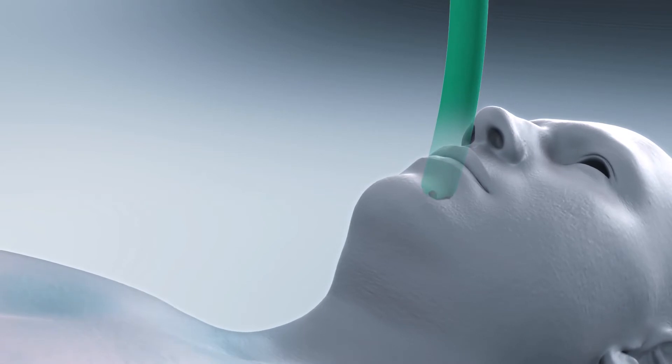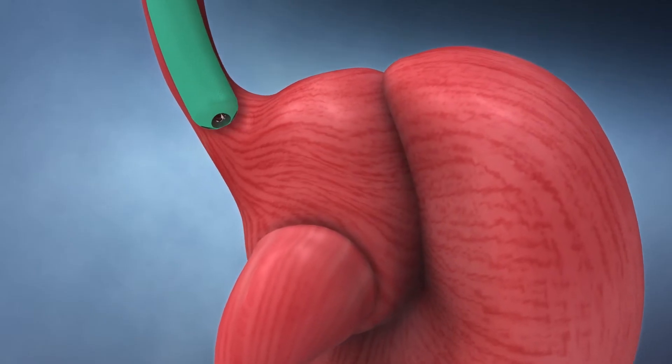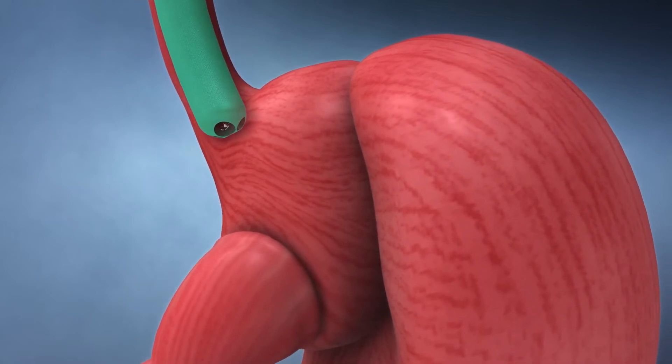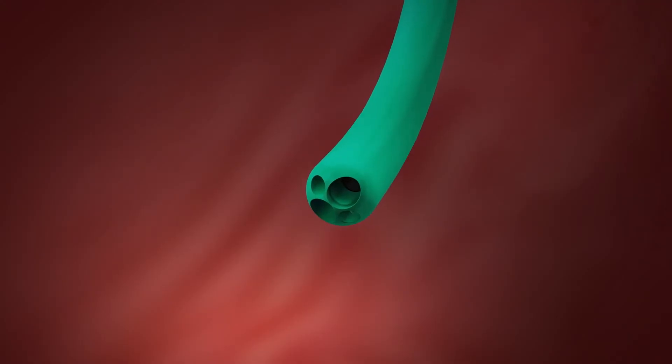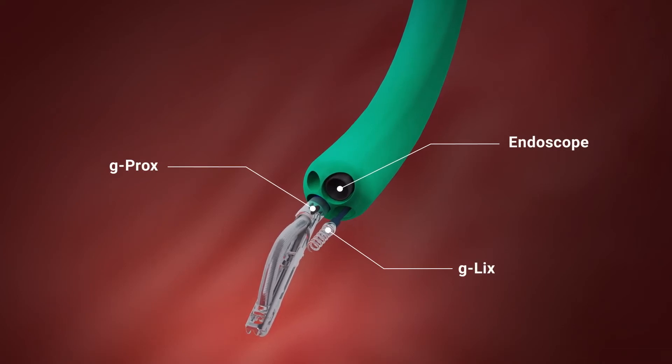During the ROSE procedure, a flexible device is inserted through the mouth and into the stomach. Multiple channels allow the insertion of an endoscope for visualization and other instruments to restore the anatomy.